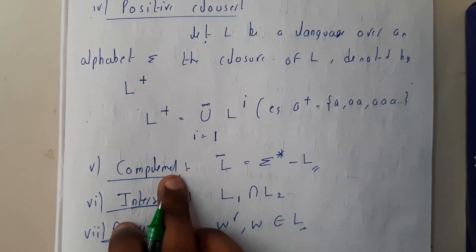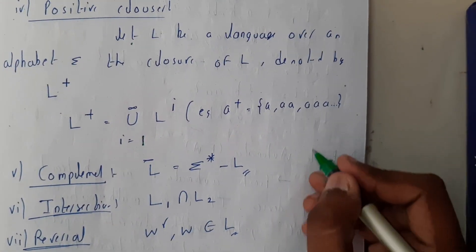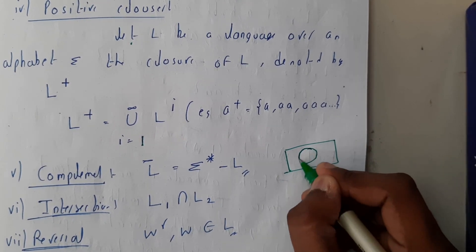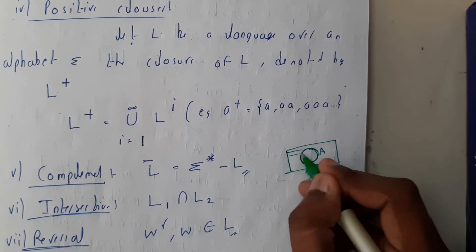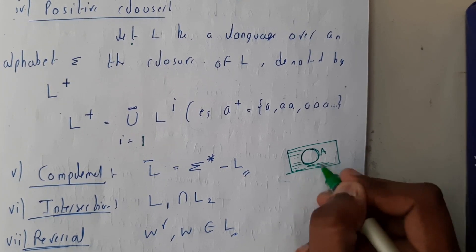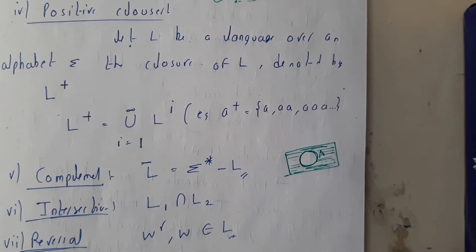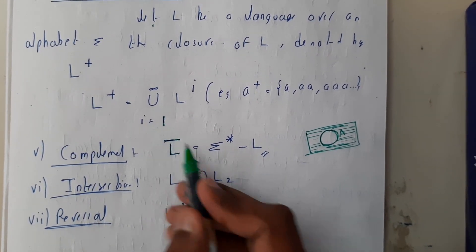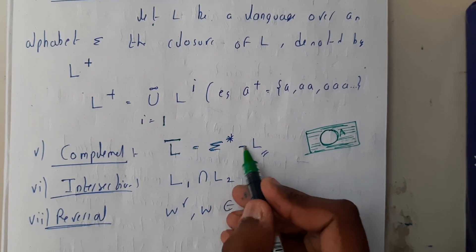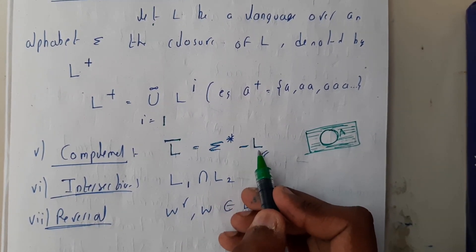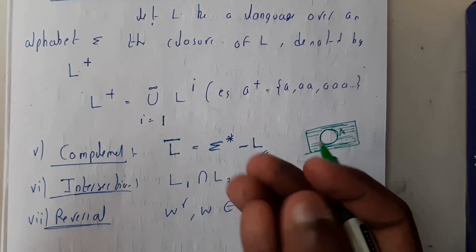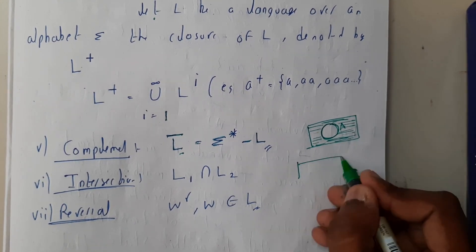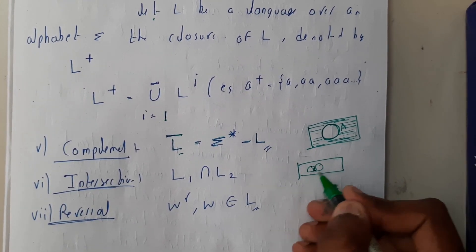Now let us go through complement. If you have a set A, then the complement of A contains everything except the elements of A. So complement of L, denoted L', equals all combinations of sigma* minus our own language L. It results in a new language containing things which are not in our language.